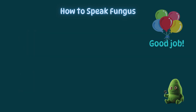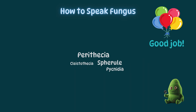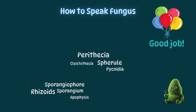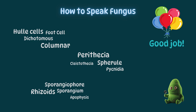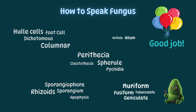Fabulous job for making it all the way through every mycology term in existence. I'm glad we didn't leave out any fruiting bodies such as perithecia, cleistothecia, spherules, and pycnidia, and when we covered Mucorales group structures like sporangiophore, rhizoids, sporangium, and apophysis, and all the Aspergillus features like hülle cells, foot cells, dichotomous, and columnar. And don't forget the finer features like muriform, fusiform, tuberculate, and geniculate — and of course my favorite tiny things like ostiole, hilum, and denticle. Yeah, remember all that. But seriously, there is an entire world of mycology to discover, and it's all good stuff. Now that your head is full, let's move on.